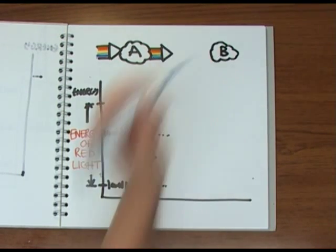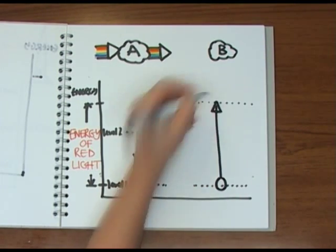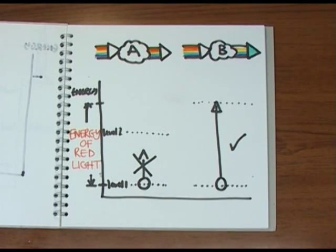But in B, the transition matches the energy, so the electron will change levels and the substance absorbs red light and therefore looks turquoise.